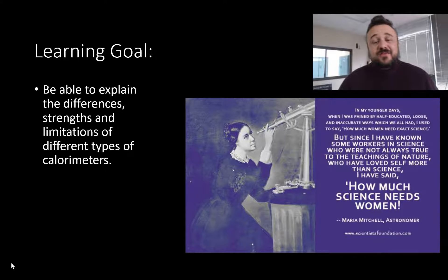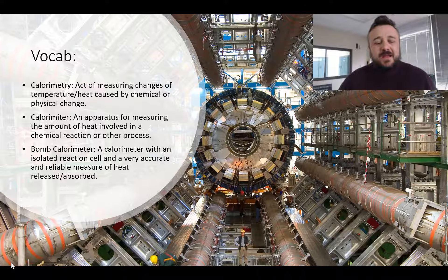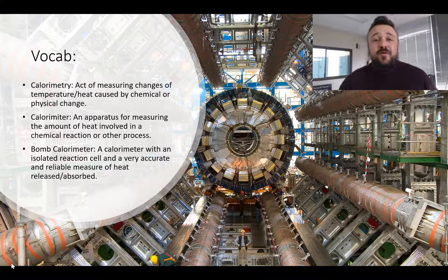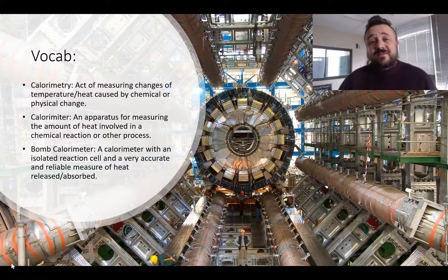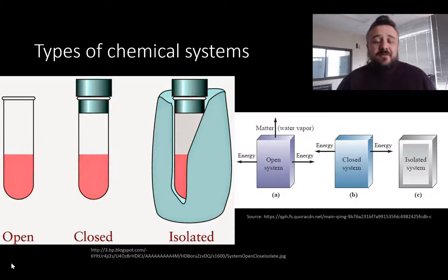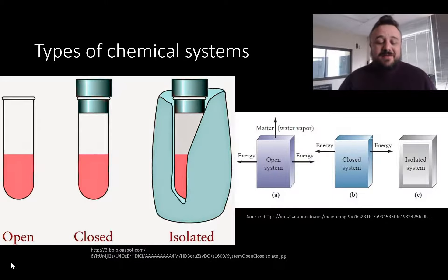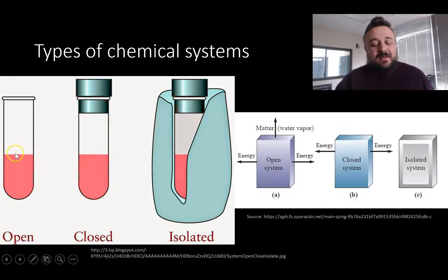We're going to talk about the ones we'll use in a school or a university research environment. So this is your vocabulary for the day — pause the video and write this down; we'll have something to refer to as the lesson continues. There are three types of chemical systems. We've got the open, closed, and isolated.